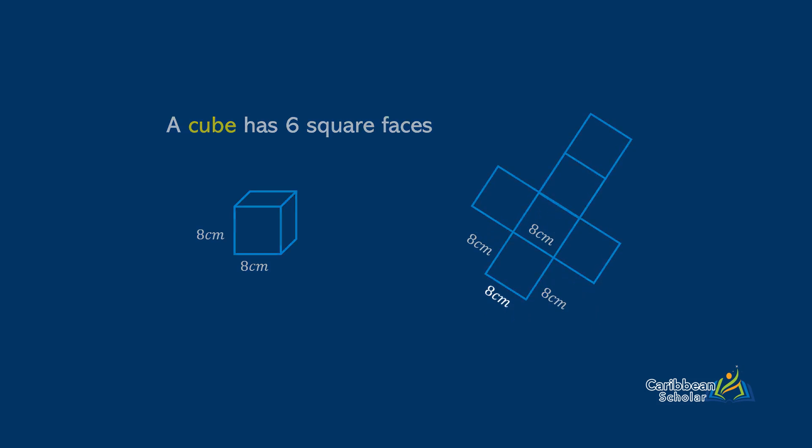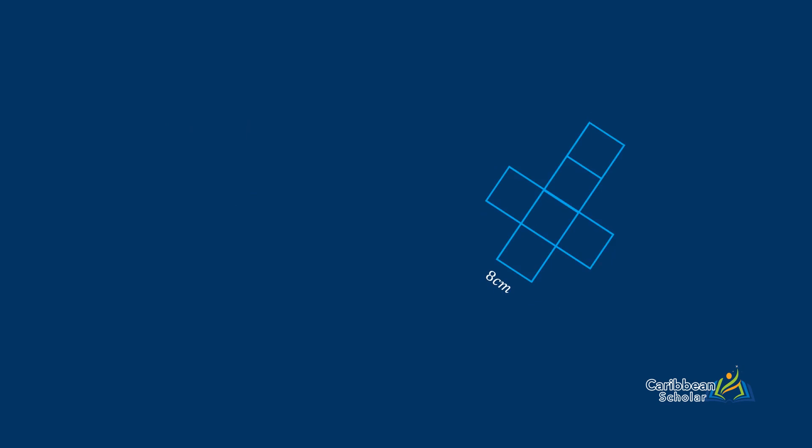Example. So here we have the net of the cube from before, and what it's saying is that the length of any side of one of the faces is eight centimeters. Since it's a cube, all of the faces are squares, so all of the lengths are exactly the same. So to find the area of this cube, we just need to find six times the area of one face, and that would be six times eight by eight, which is 384 centimeters squared.